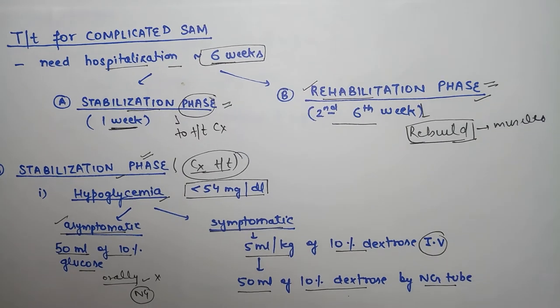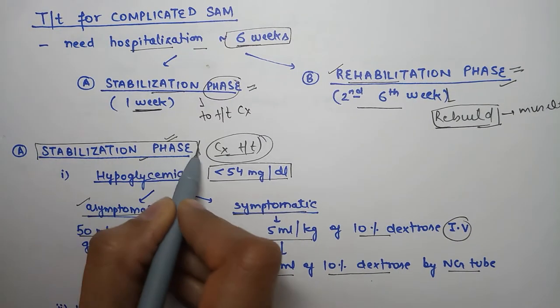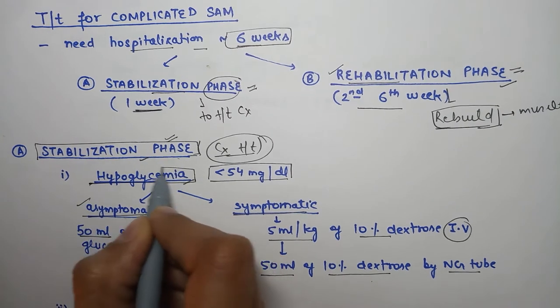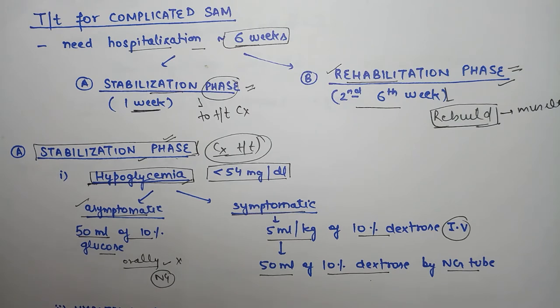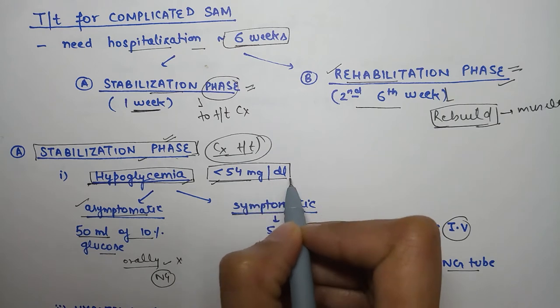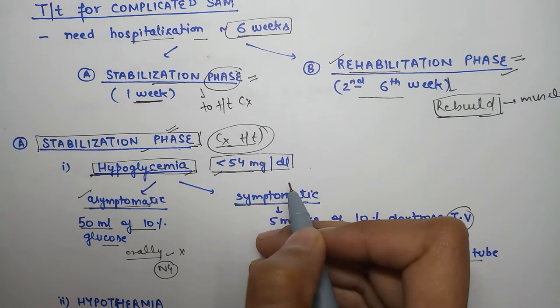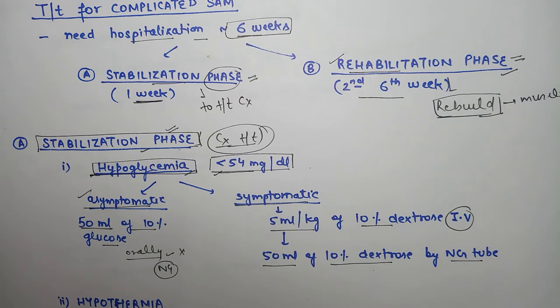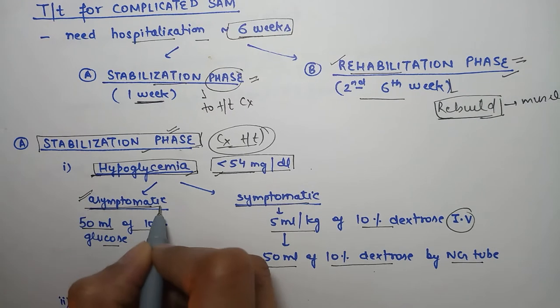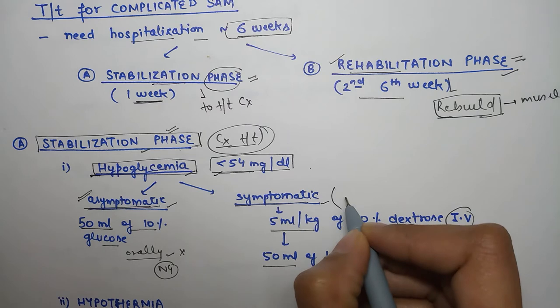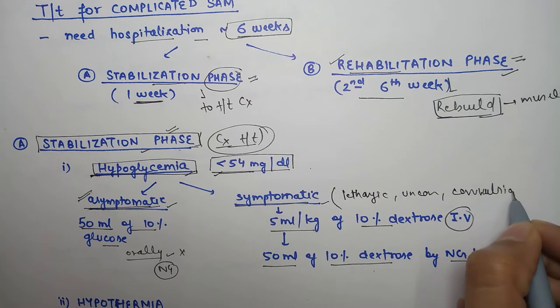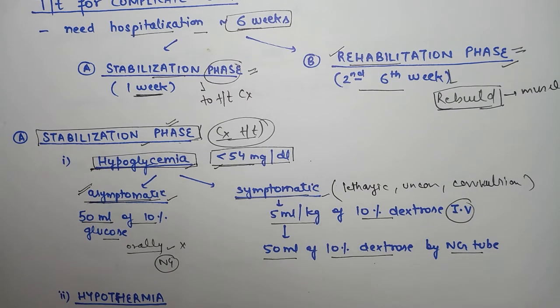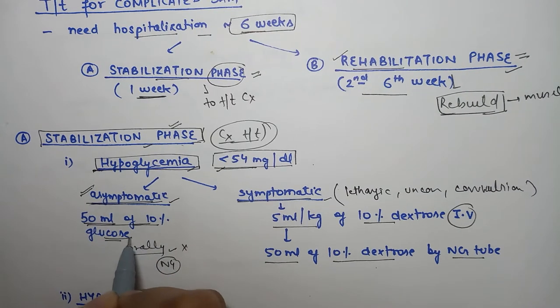In stabilization phase, first complication is hypoglycemia - blood sugar below 54 mg per deciliter. If we cannot measure, assume patient is hypoglycemic and start treatment. Check if patient is asymptomatic or symptomatic like lethargic, unconscious, or having convulsions. If asymptomatic, give 10% glucose 50ml orally, or by nasogastric tube if child doesn't take it.